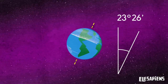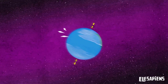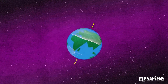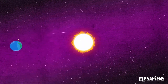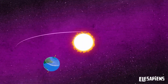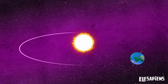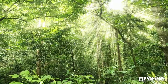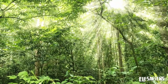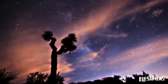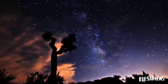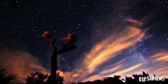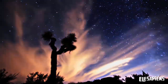The tilt of the Earth's axis, the rotation, and the revolution movement produce the optimal conditions for life on Earth. The way the sun reaches us during each season produces a change in the light, the weather, the seasons, and the duration of the day and the night.